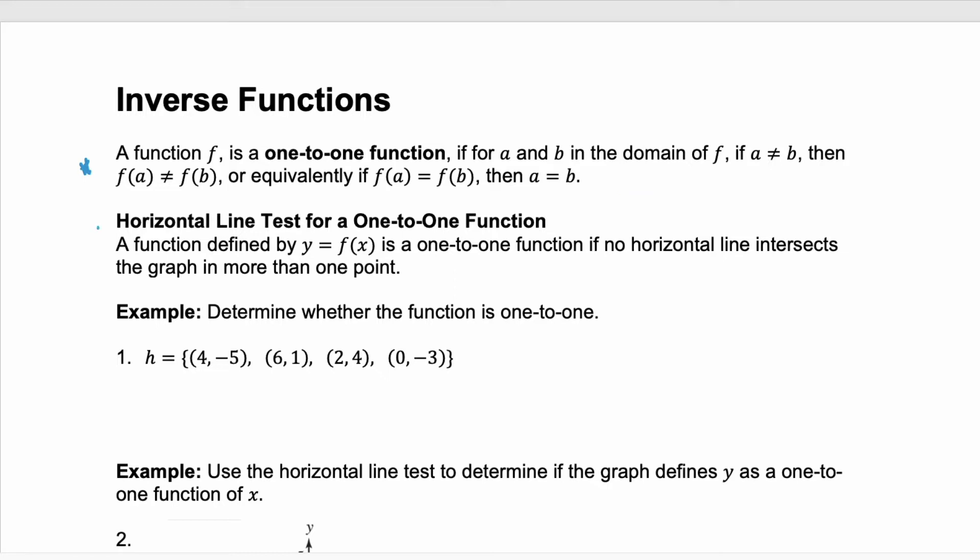If you're given a graph, you can use a horizontal line test to determine if a function is one-to-one. You'll draw a horizontal line through the graph, and as long as it doesn't intersect in more than one place, you have a one-to-one function.